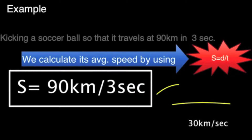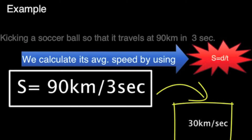For example, kicking a soccer ball so that it travels at 90 kilometers in 3 seconds. We calculate its average speed using the equation: speed is equal to distance divided by time. Using this equation, speed is equal to 90 kilometers divided by 3 seconds, which gives you a total of 30 kilometers per second. So a soccer ball would ultimately travel at 30 kilometers per second.